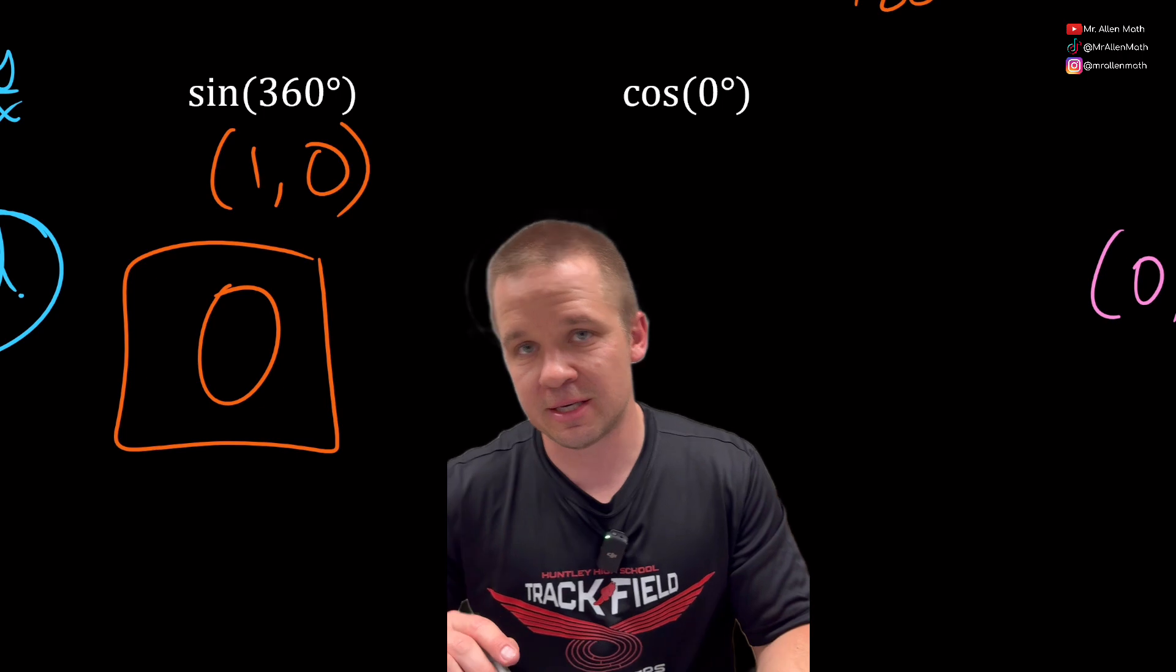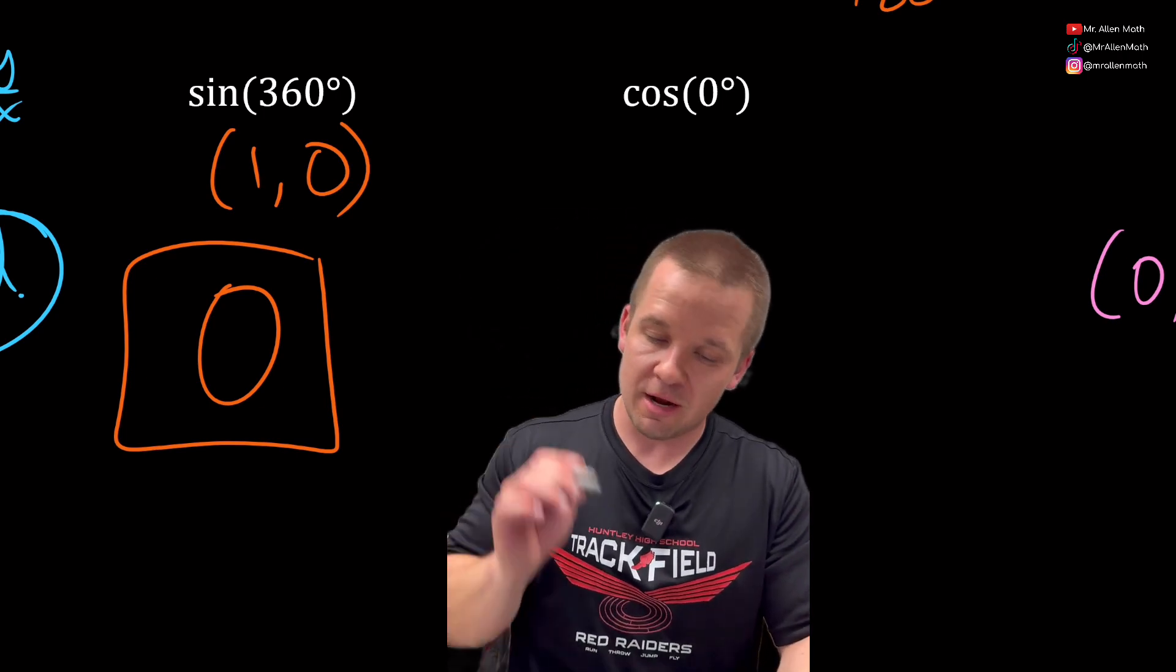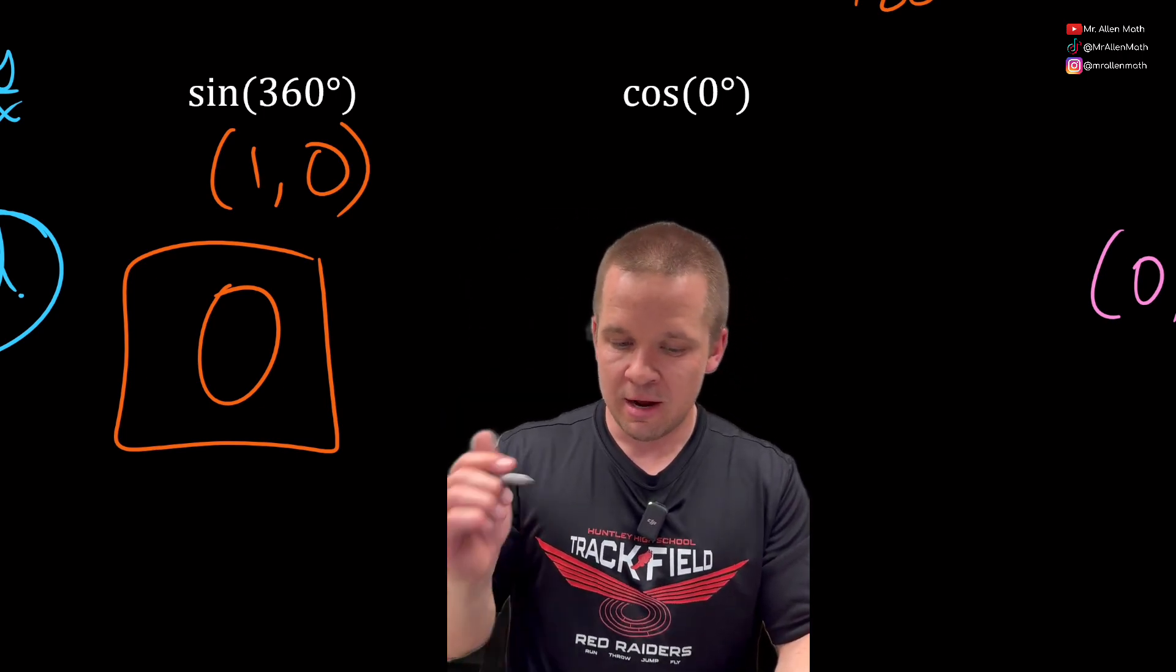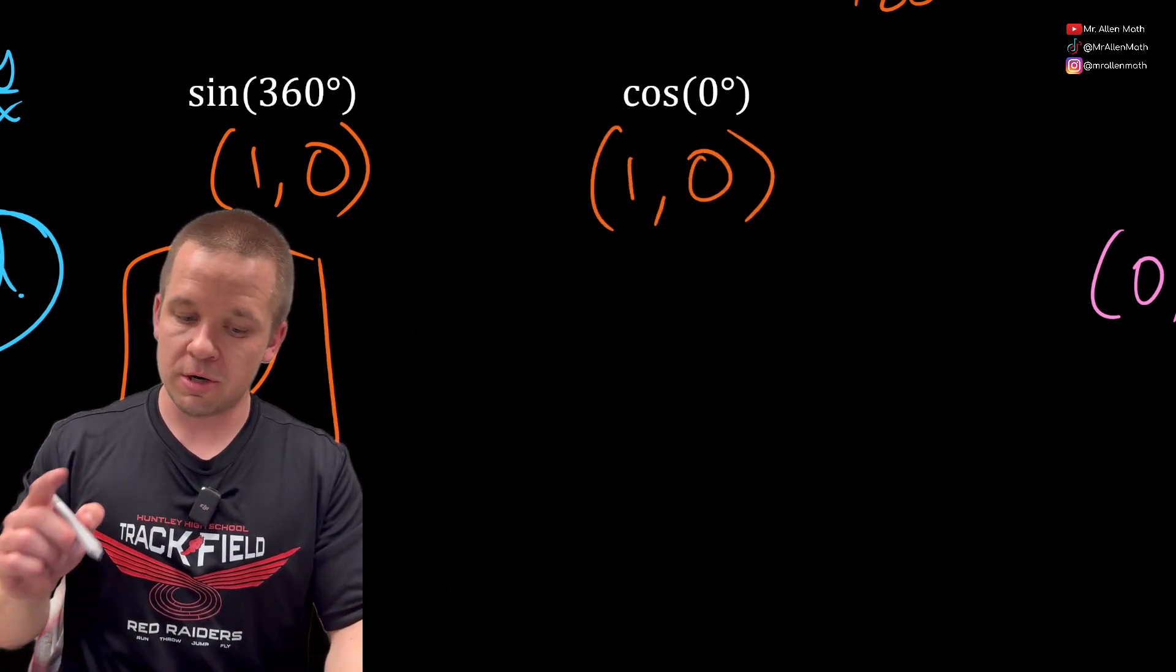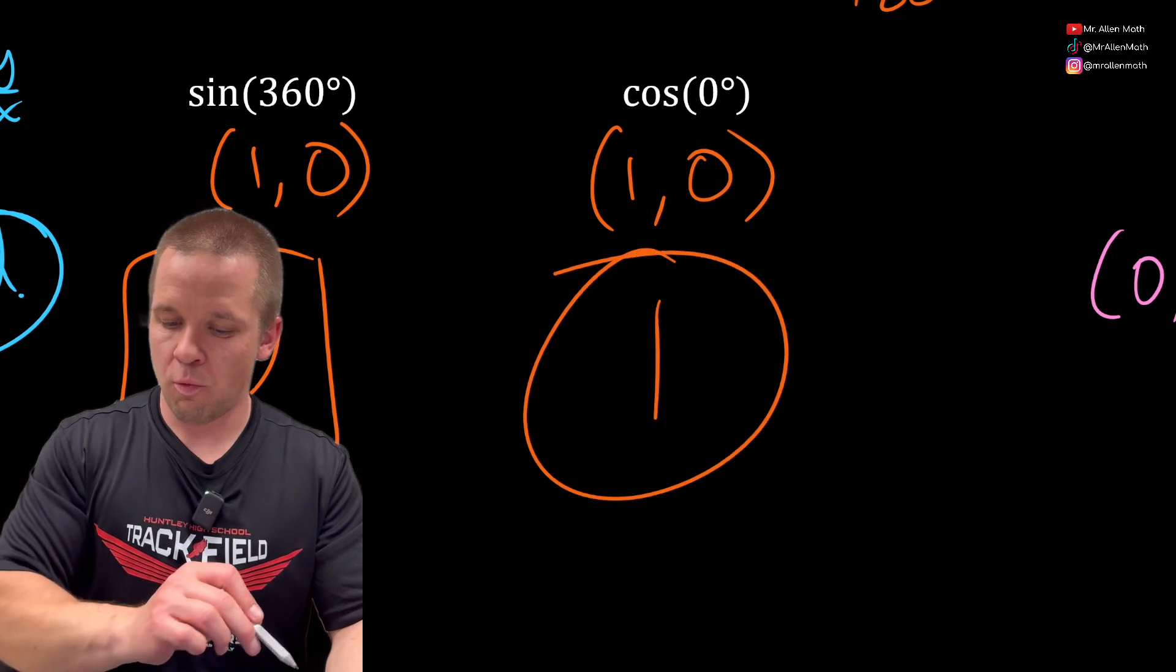And then lastly, cosine of zero degrees. Zero is the same as the 360 ordered pair, (1,0). Cosine is the x-coordinate, so it is just one.